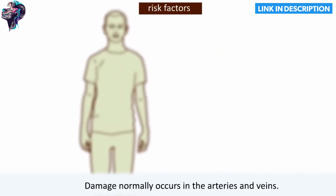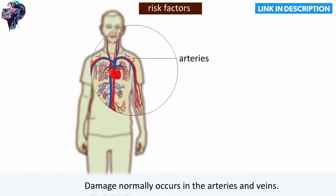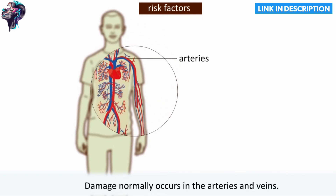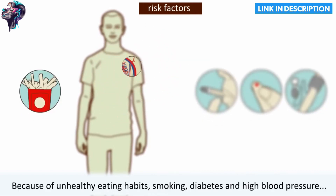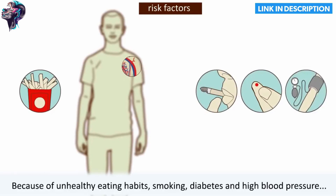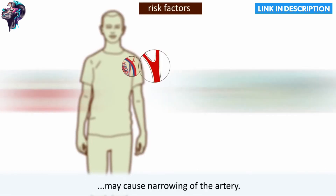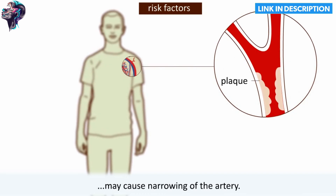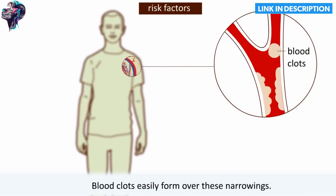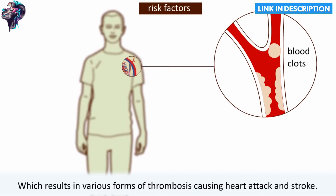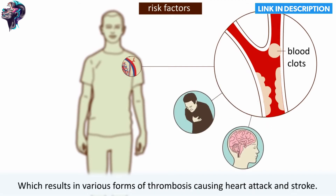Damage normally occurs in the arteries and veins. Unhealthy eating habits, smoking, diabetes, and high blood pressure may cause narrowing of the artery. Blood clots easily form over these narrowings, which results in various forms of thrombosis causing heart attack and stroke.